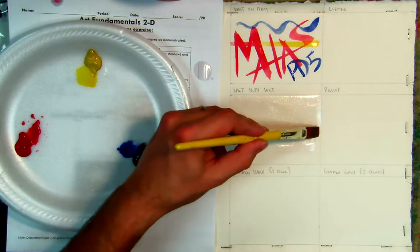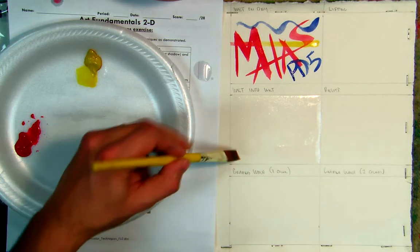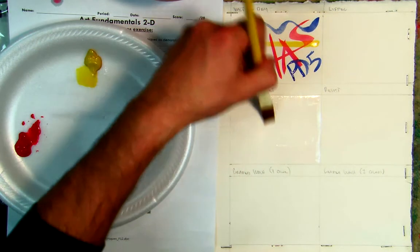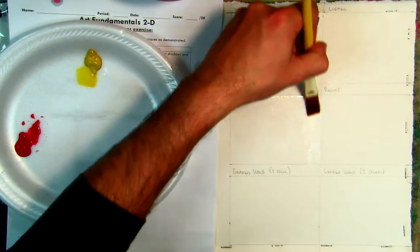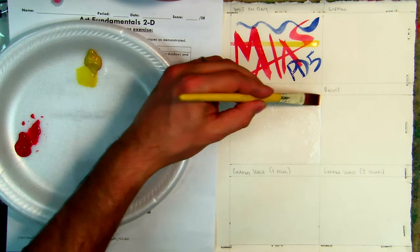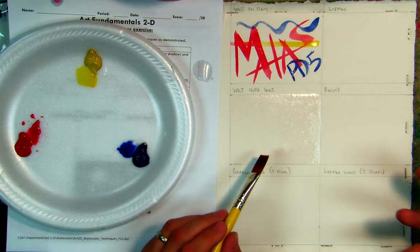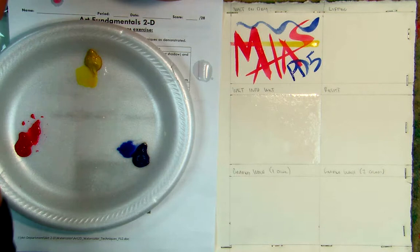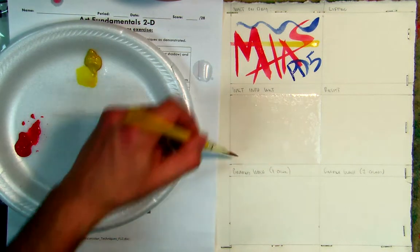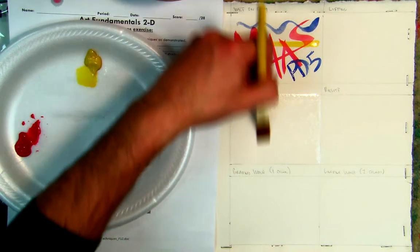Okay, with watercolor, you stay away from using black and white. You do not use those. The reason for this is because white, the color of the paper is white. You use more water with the paint and it becomes more transparent. So you let the white of the paper serve as your lightening, as your highlights.